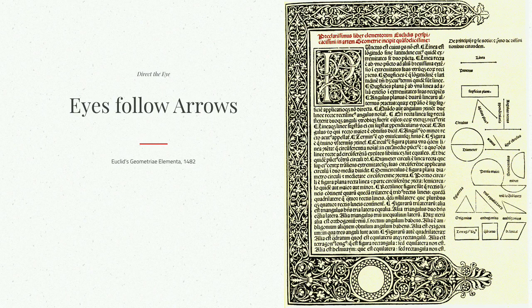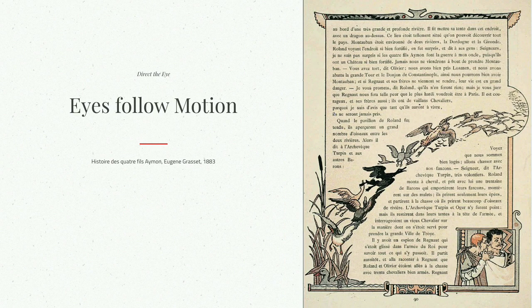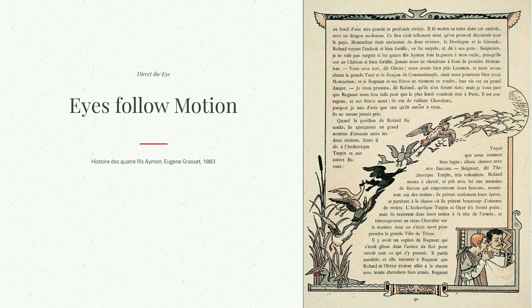You can use motion in the same way — eyes follow motion. If we see that something is moving a certain way, it's an innate human feeling that we should find out why and follow it. In this example, you can see the birds moving across the page, and it directs the eye in that direction. So if you have a page on the right, it's going to direct the reader to the right.